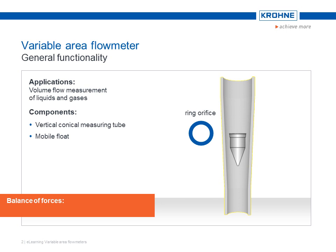Three main forces act on the moveable float. The gravitational force W, weight, operates downwards as the reset force. Whereas the buoyancy force B and the flow force D, drag, work in an upward direction.